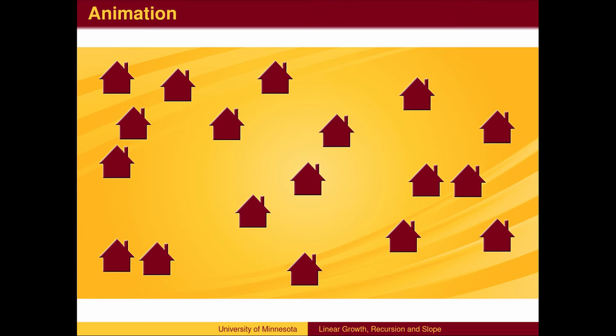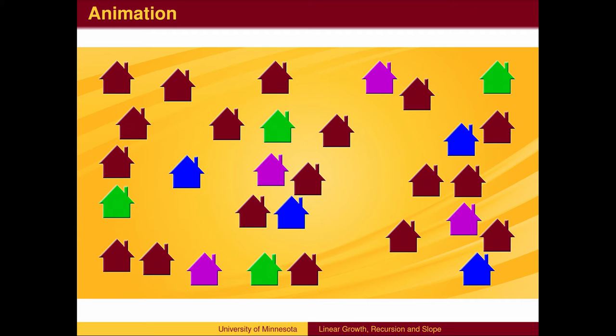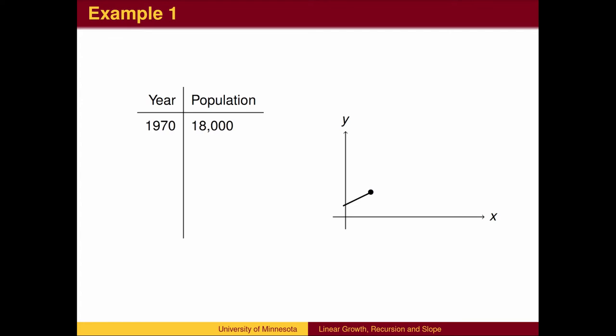For example, the population of a suburb may be increasing by 4000 residents every 10 years. We call this Linear Growth.